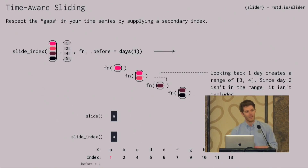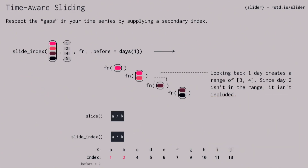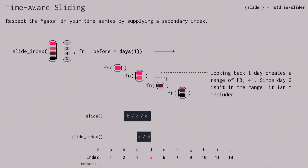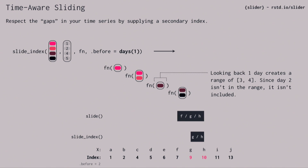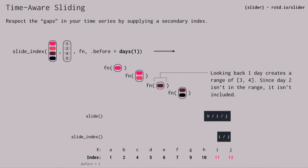I'm more excited about the fact that there's this idea of time-aware sliding built into this package. So slide_index is this other function, and it allows you to pass a secondary date-like index.